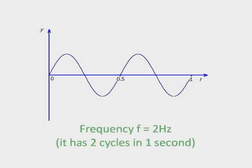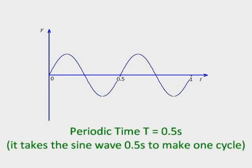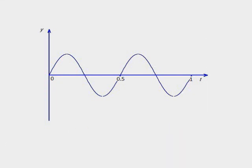The sine wave shown has a frequency of 2 hertz, since there are 2 cycles in 1 second. Its periodic time is 0.5 seconds. It becomes obvious that the periodic time will always be 1 over the frequency. Hence, f is equal to 1 over t.